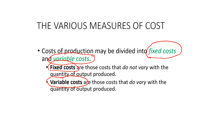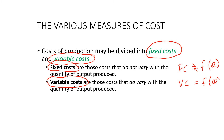We may say that fixed cost is not a function of quantity — whatever quantity we produce, it does not affect the fixed cost. Whereas variable cost is a function of quantity.